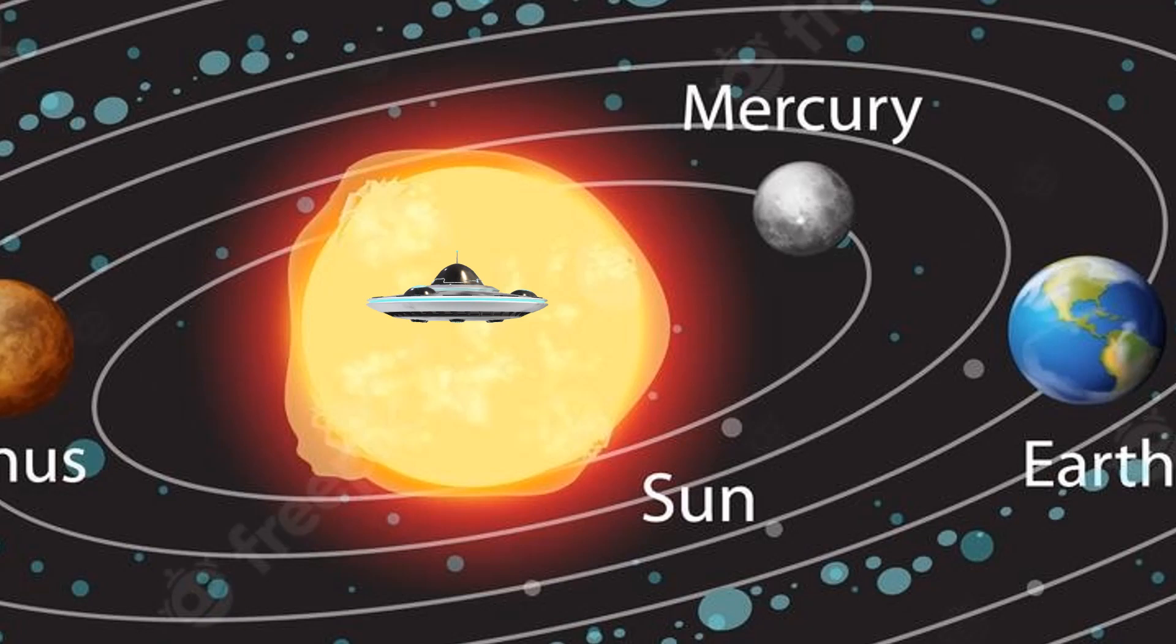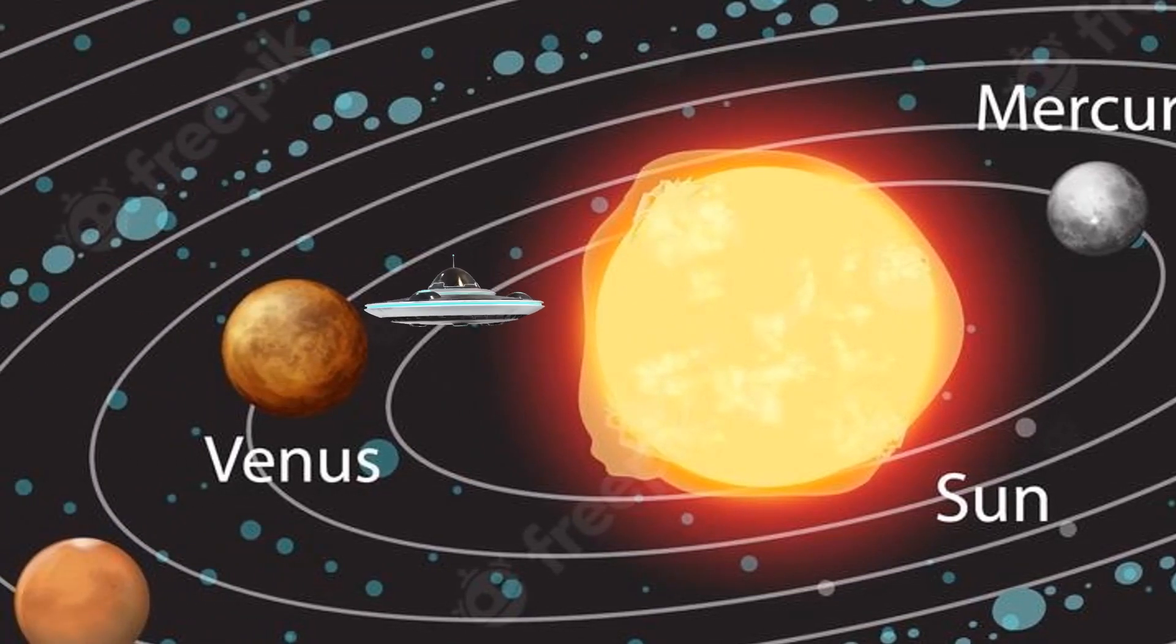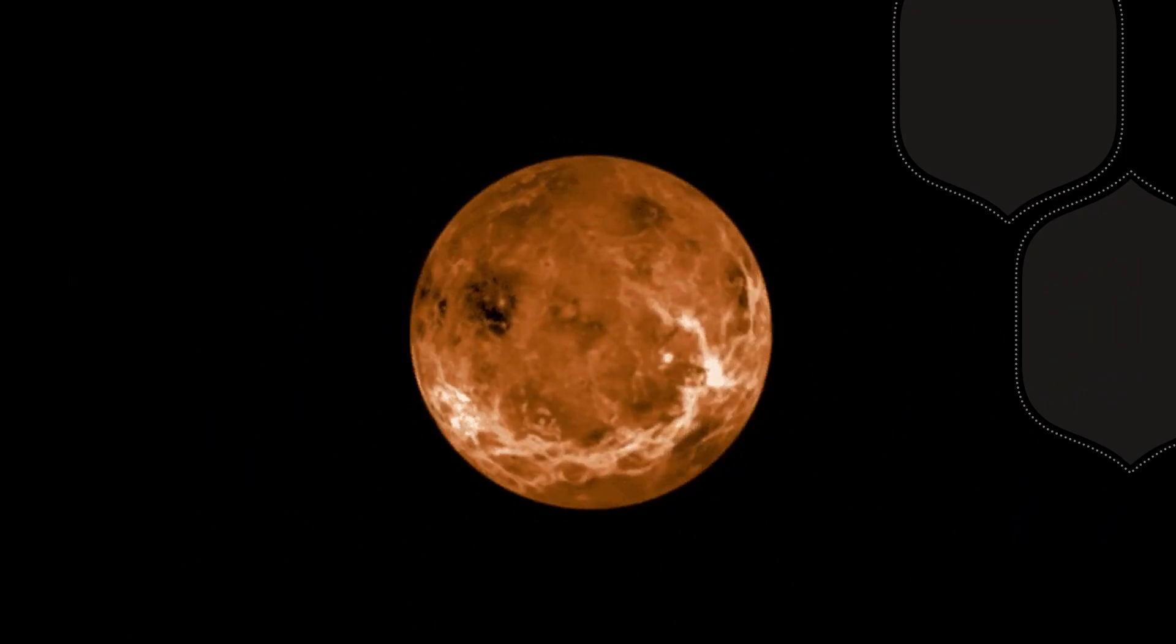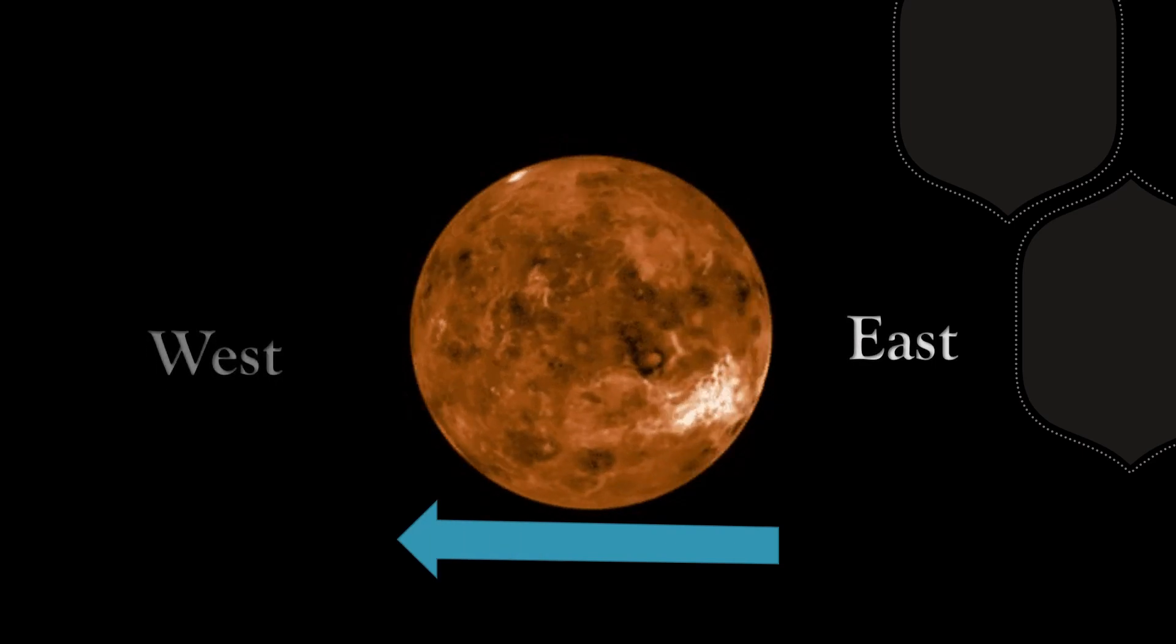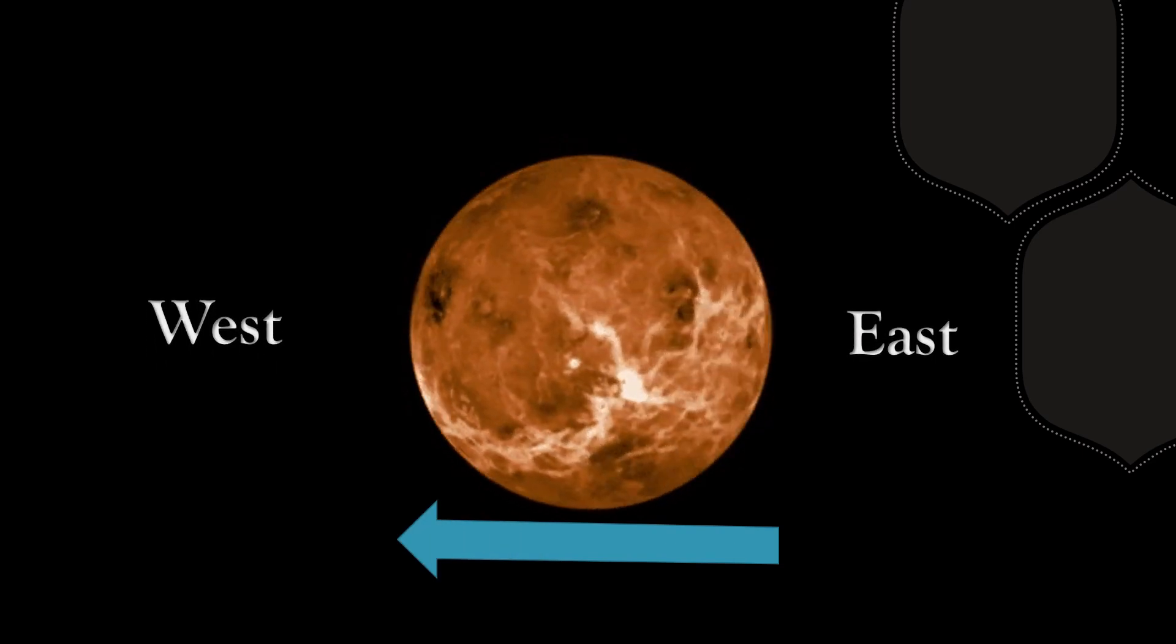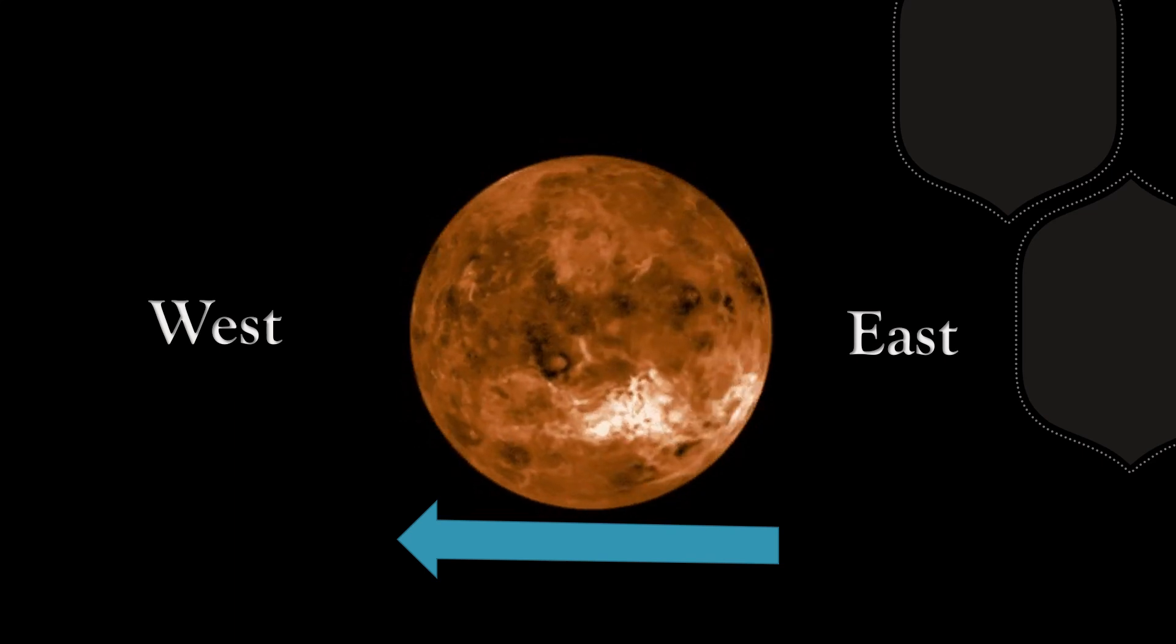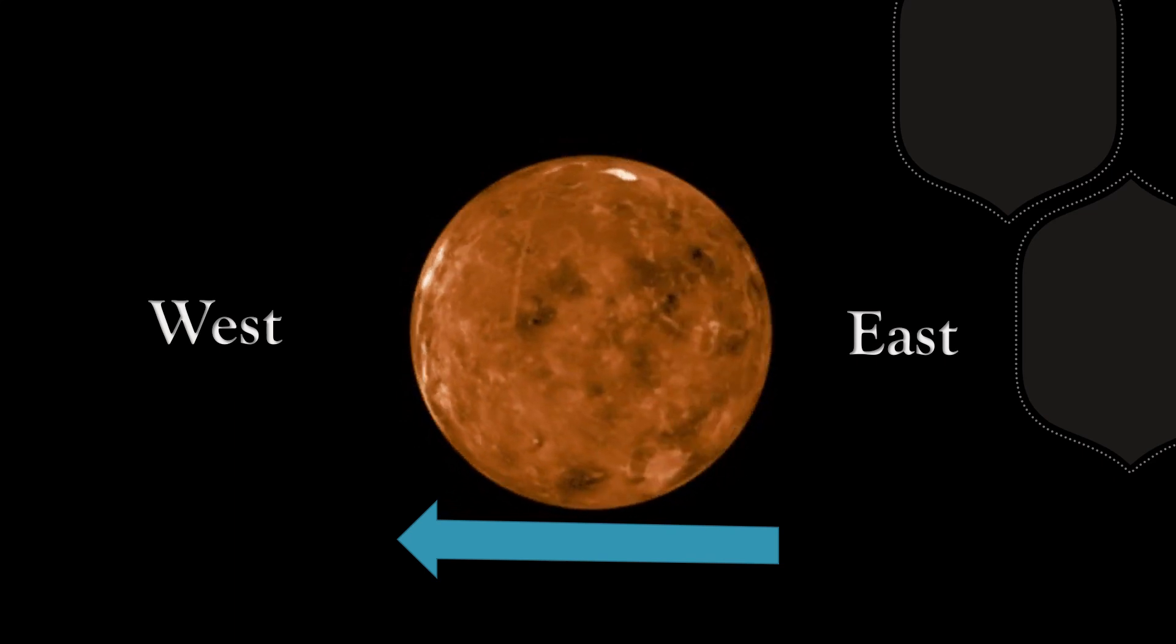Now, let's go to the second closest planet to the Sun. Venus is a special planet. It rotates from east to west. This is very different from Earth and other planets which rotate from west to east.